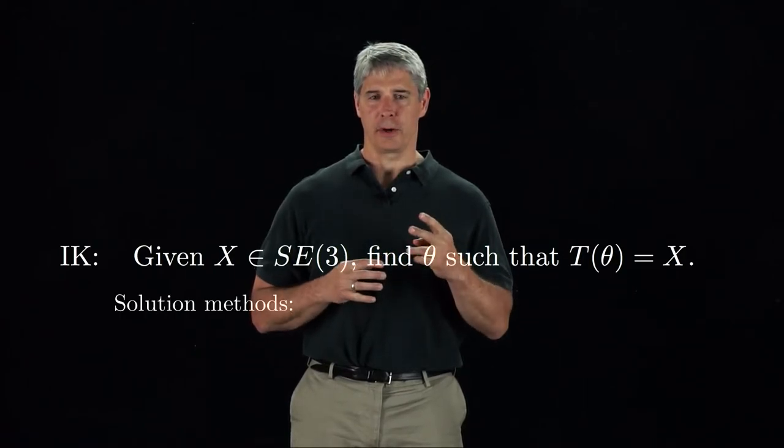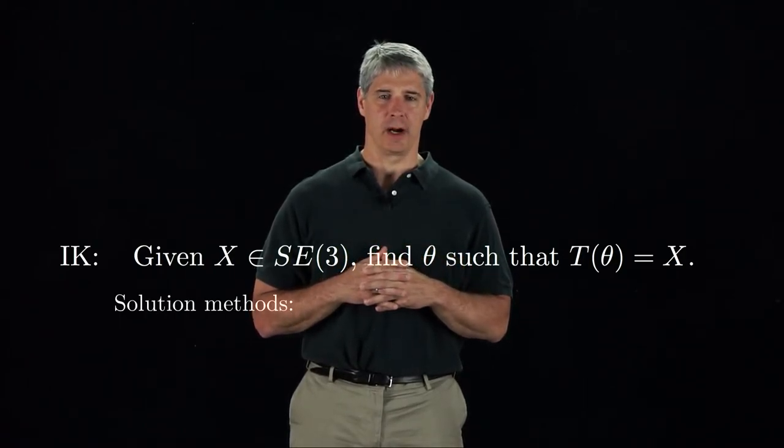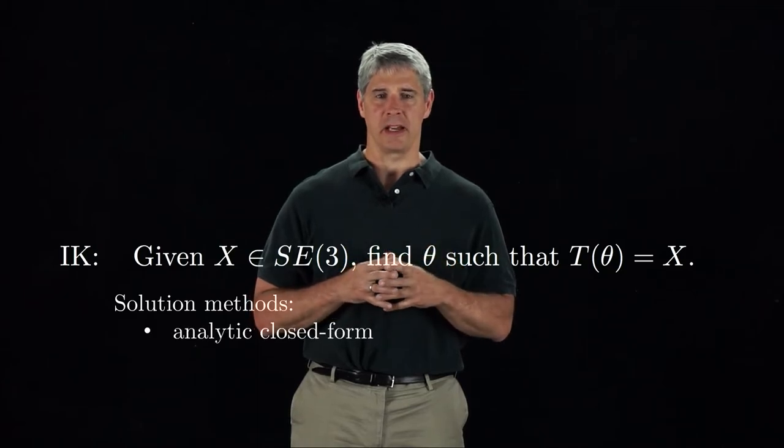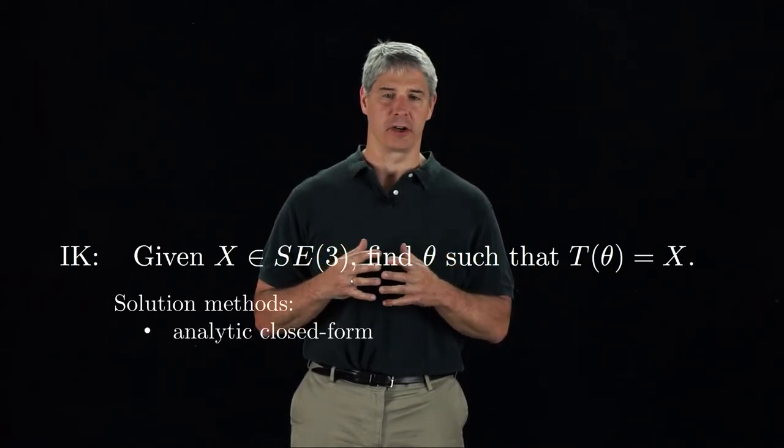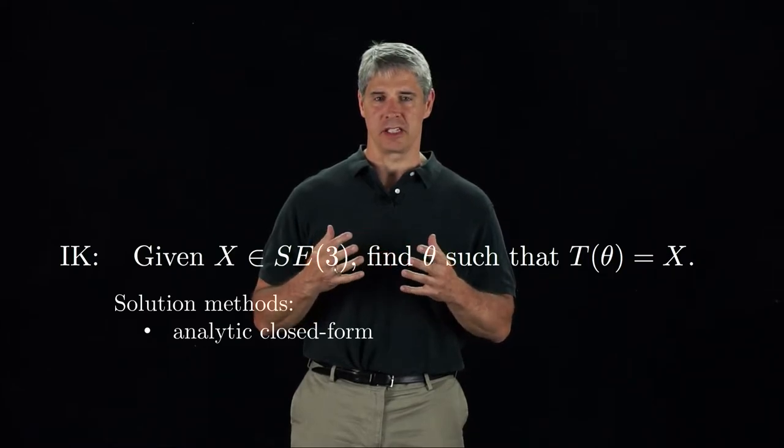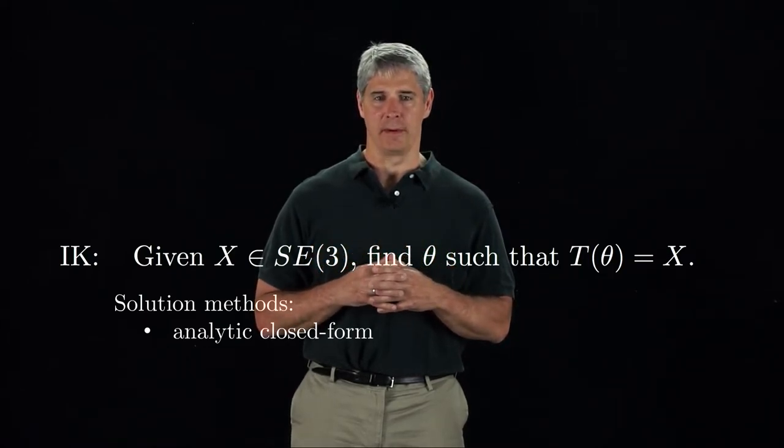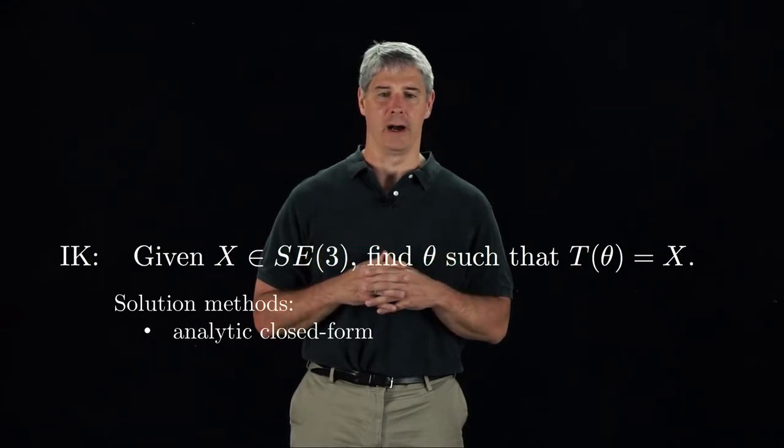There are two approaches to solving the inverse kinematics problem. First, in some cases, we can find analytic closed-form solutions to the nonlinear equations. These solutions typically take advantage of geometric insight into the problem and the particular structure of the robot.